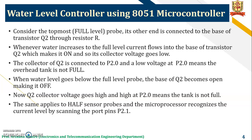The collector of Q2 is connected to P2.0. A low voltage at P2.0 means the overhead tank is full. When the water level goes below the full level probe, the base of transistor Q2 becomes open, making it turn off. The transistor Q2 collector voltage goes high, and a high at P2.0 means the tank is not full. The same applies to the half sensor probes, and the microcontroller recognizes the current level by scanning port pins of P2.1.